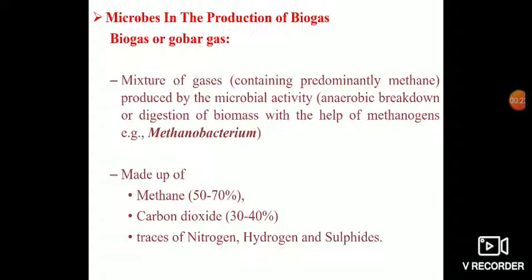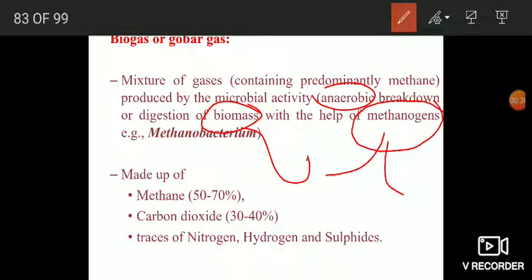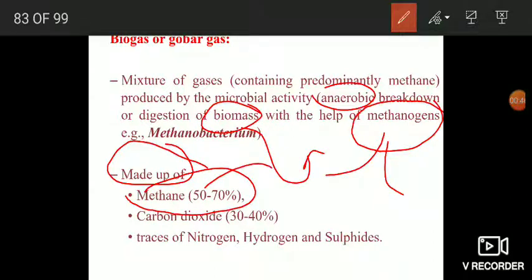Biogas is actually a mixture of gases which predominantly contains methane, and this mixture of gases is produced by a group of bacteria known as methanogens. Methanogens are anaerobic bacteria which break down or digest the biomass, and this is accompanied with the release of methane. The composition of biogas is methane 50 to 70 percent, carbon dioxide 30 to 40 percent, and there are also traces of nitrogen, hydrogen and sulfides.